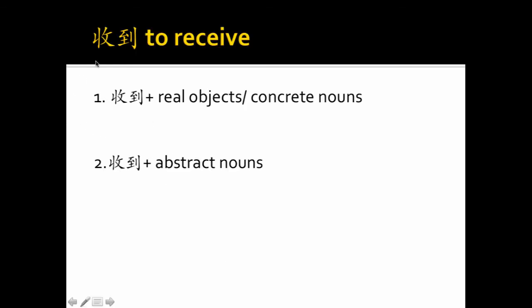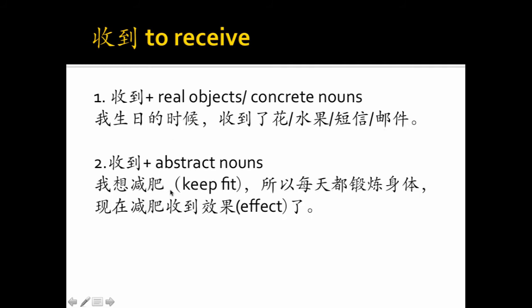Different from 受到, 收到 to receive can be followed by real objects and abstract nouns. For example, 我生日的时候,收到了花,水果,短信,邮件—flower, fruits, message, and email, they are all real objects. 我想减肥, I want to keep fit, 所以每天都锻炼身体,现在减肥收到效果了。效果 means effect, it's an abstract noun. So 减肥收到效果 is what I desire. The subject 我 is not the passive receiver. I'm very actively acting toward the effects. 你懂了吗?